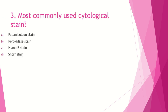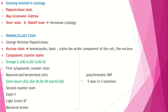Question number 3: Most commonly used cytological stain. Option A, Papanicolaou stain; option B, peroxidase stain; option C, H&E stain; option D, Shorr stain. The most commonly used cytological stain is of course Papanicolaou stain. Another important stain used in cytology is May-Grünwald Giemsa stain or MGG stain. For hormonal cytology evaluation of cervical/vaginal smears, Shorr stain and Rack stain are used.